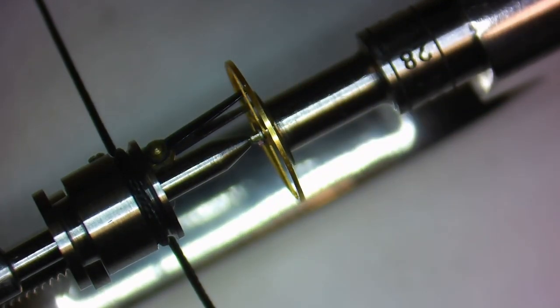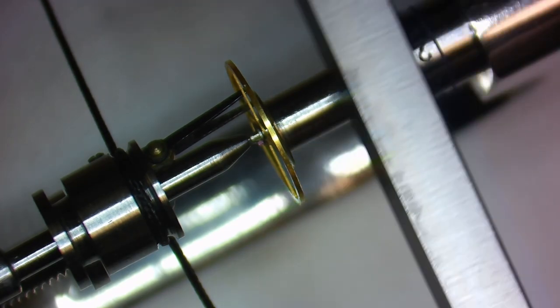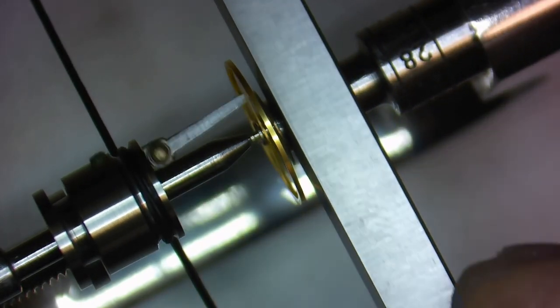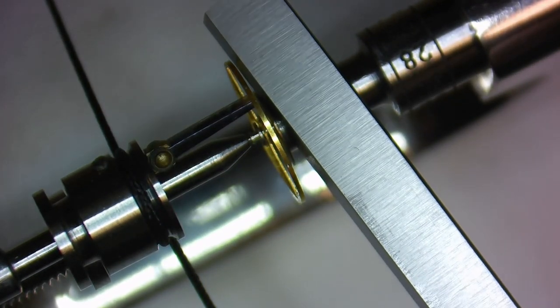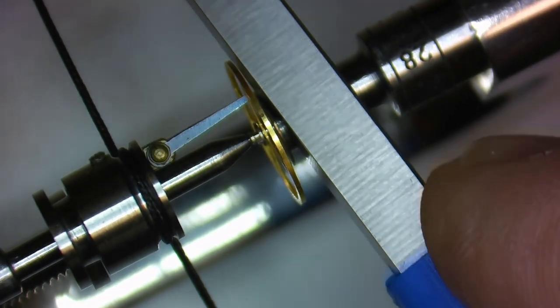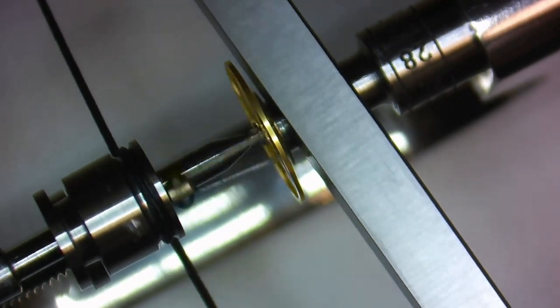The main difference between burnishing a dome on a balance pivot and burnishing a regular pivot is that with a regular pivot, you're just holding the burnisher flat on the pivot as you work it. When you're working with balance pivots, you have to move the burnisher at an angle to shape the dome on the pivot.